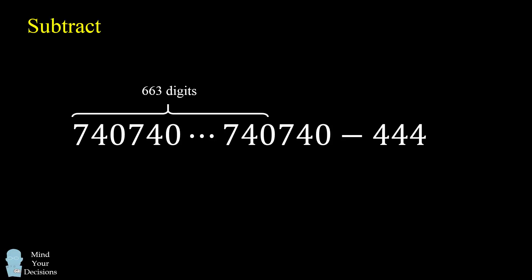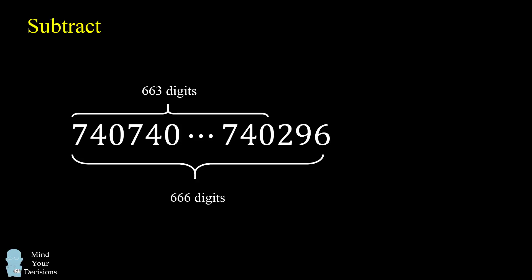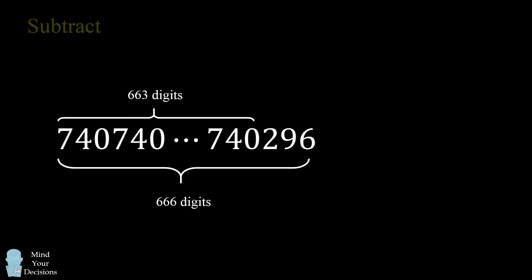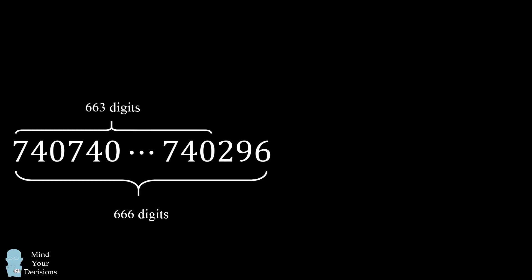So we'll now subtract out, which will affect the last 3 digits. And those will become 296. So that's how we get to this answer of a 666 digit number, where the first 663 are 740, and the last 3 are 296.